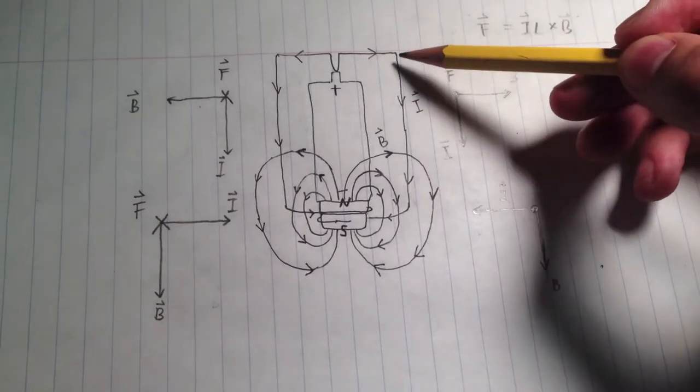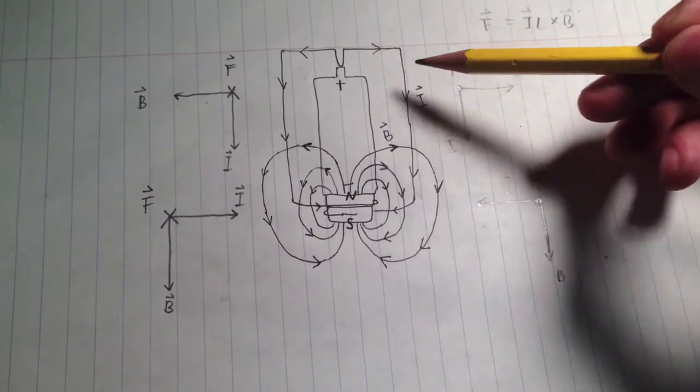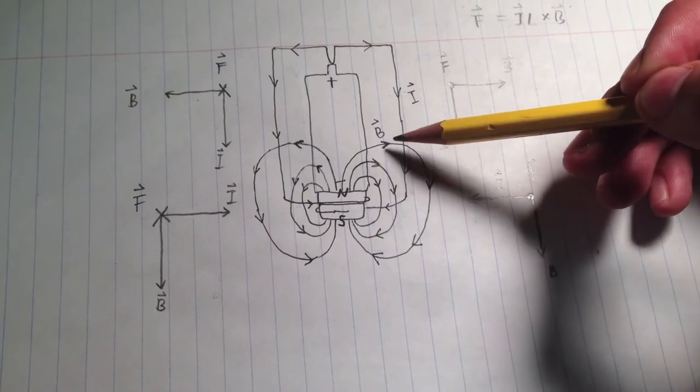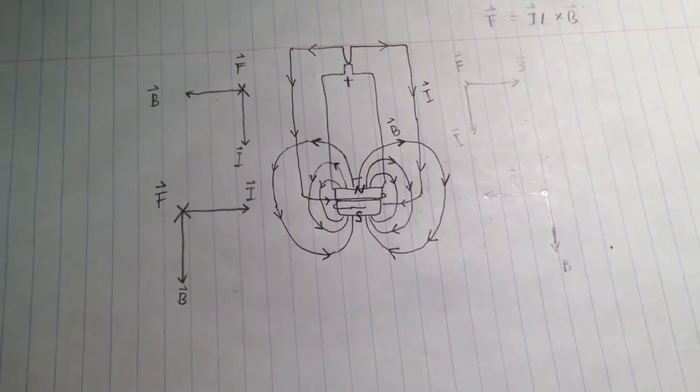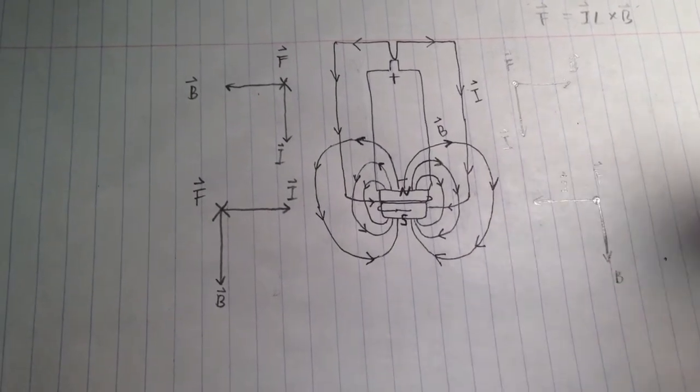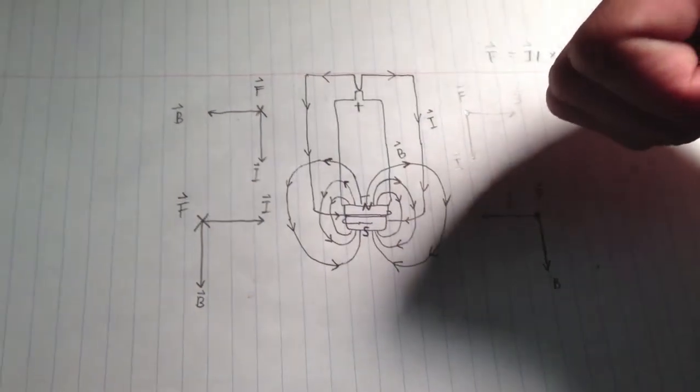As we can see for this part of the wire, the current is going this way and the magnetic field is traveling this way. Using the right hand rule, we can see that the force is coming out of the page.